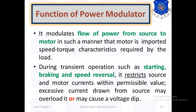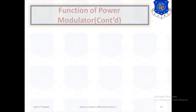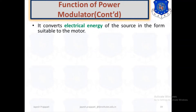During transient operations such as starting, braking, and speed reversal, it restricts source and motor current within permissible values, because high current drawn during transient operation can cause overload and voltage drop.